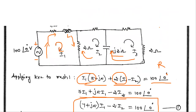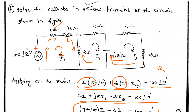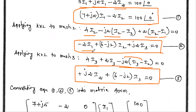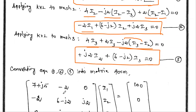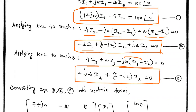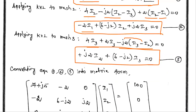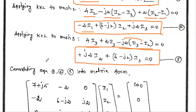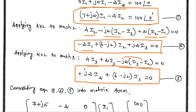To solve for the three mesh currents i1, i2, i3 using Cramer's rule, we first write the three KVL equations in matrix form. The first row corresponds to the first equation: coefficient of i1 is (7 + j5), coefficient of i2 is -2, and coefficient of i3 is 0.